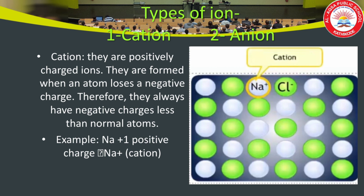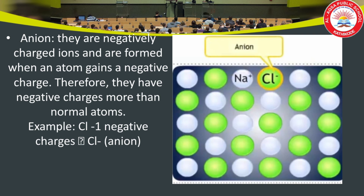There are two types of ions: the first one is cation and the second one is anion. Cations are positively charged ions and are formed when an atom loses a negative charge, that is an electron. Therefore they always have fewer negative charges than normal atoms. For example, Ca2+ is a cation. Anions are negatively charged ions and are formed when an atom gains a negative charge, that is an electron. Therefore they have more negative charges than normal atoms. For example, Cl− is an anion.